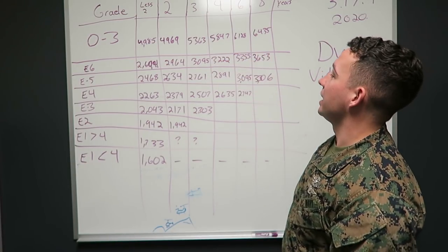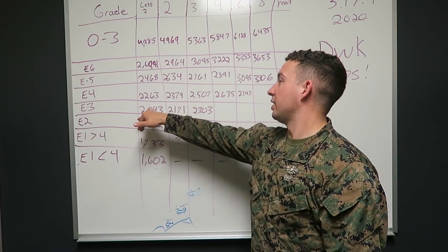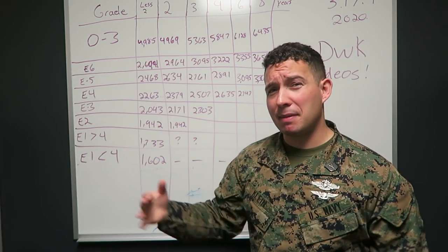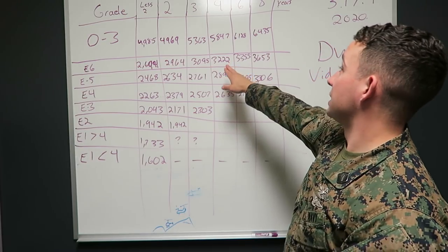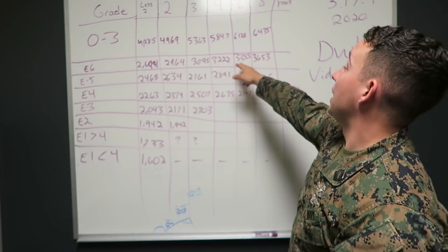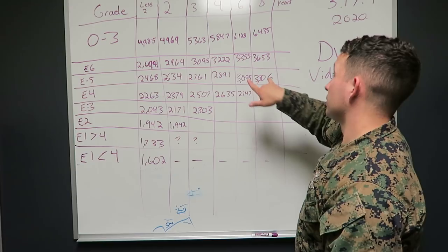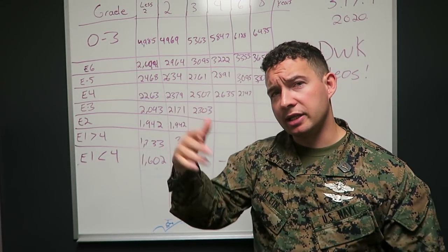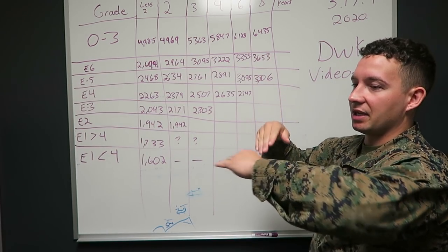It just directly affects how you can live your life. You think an O3 with eight years is worried about the same things that an E3 with three years is thinking about? No. Pay makes a difference. Pay isn't everything, but money kind of regulates the activities you can do on your free time. E6, four years, $3,222. Six years, $3,355. $3,653 after eight years. So good $300 bump from six to eight years for E6. And then once you pick up chief, you're kind of, it's a big gap from E7 to E6.